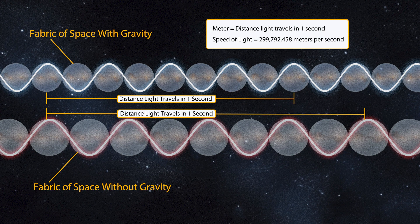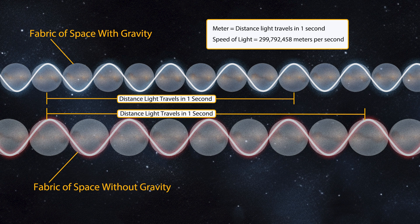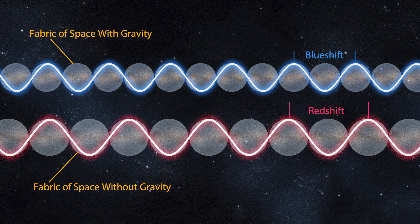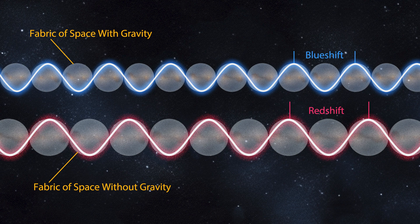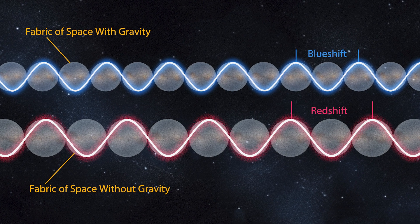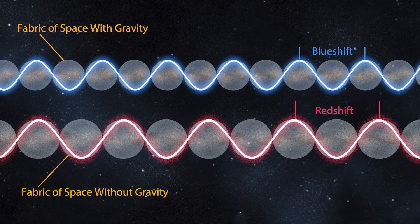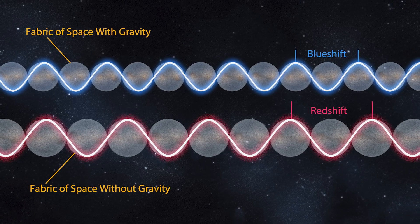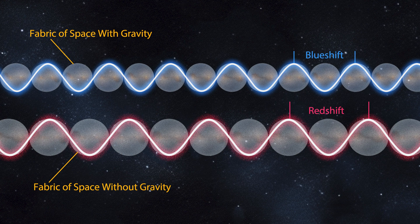If light travels at a constant speed of 299,792,458 meters per second, but a meter is measured as the distance light travels in one second, then the true distance or speed that light travels would need some sort of calibration for the effects of gravity. Currently, red shift and blue shift are concepts used by astronomers to chart the expansion of the universe. Blue shift occurs when objects are moving towards the viewer, and red shift occurs when an object is moving away, much like the Doppler effect for sound.